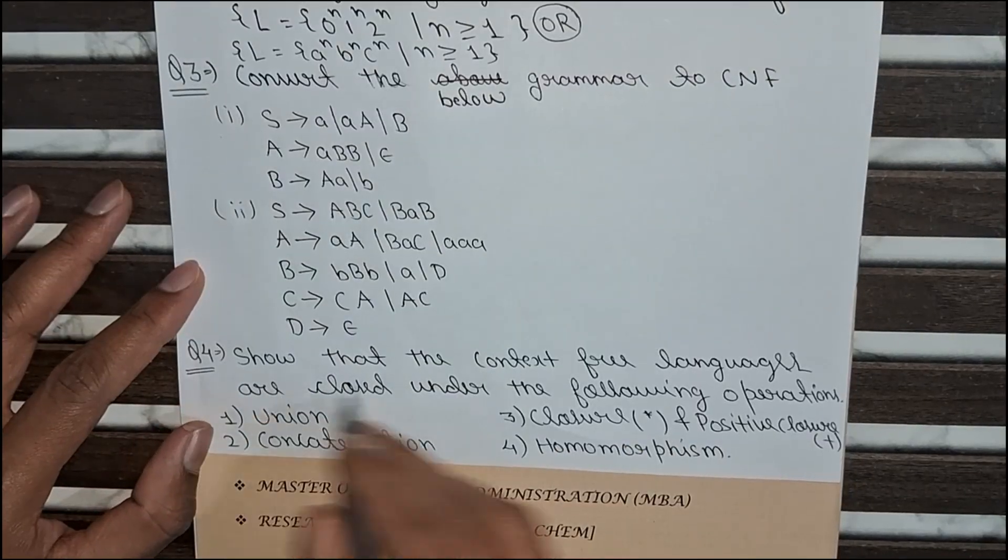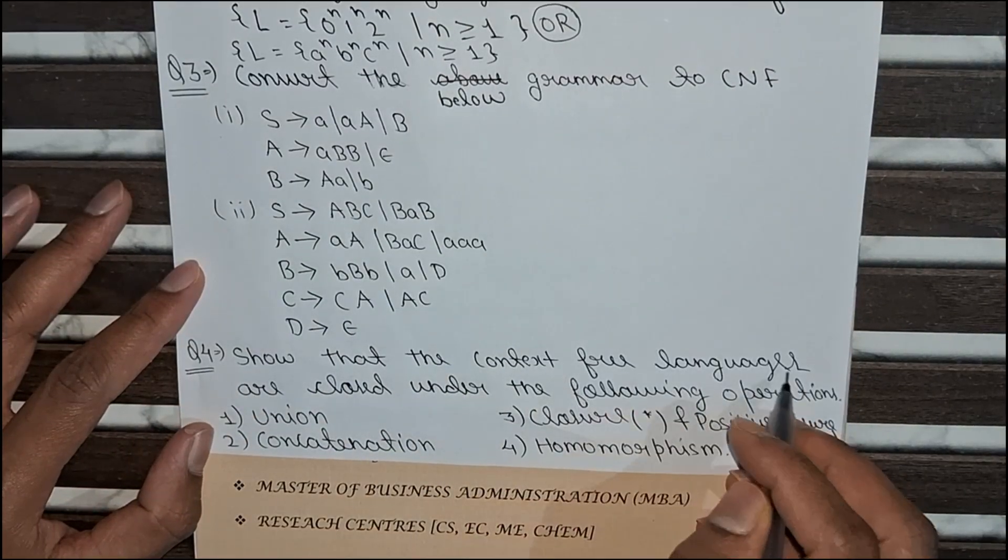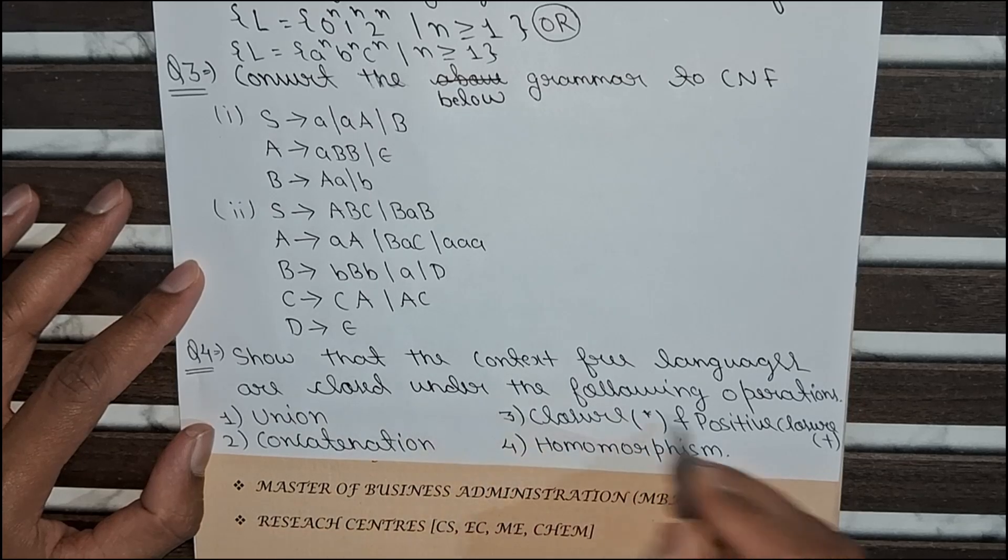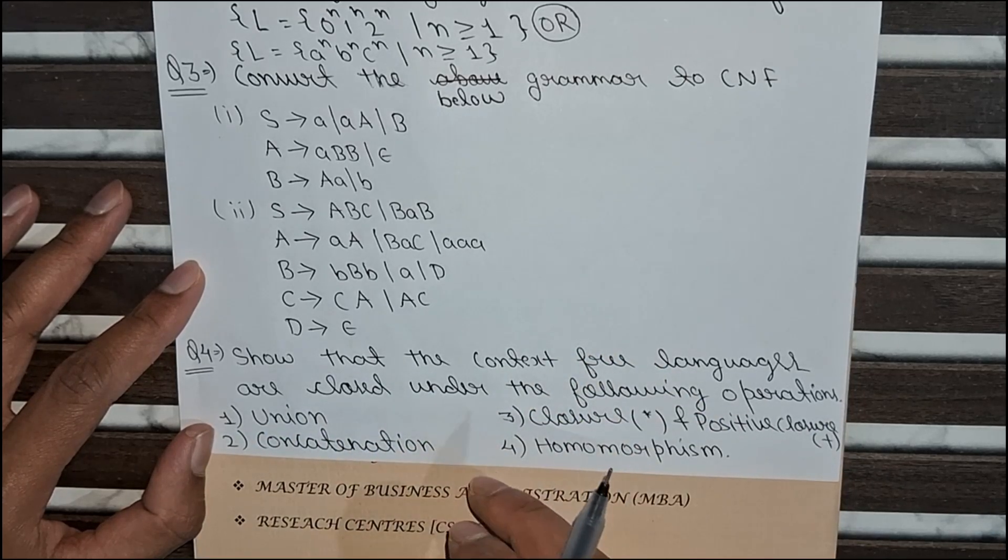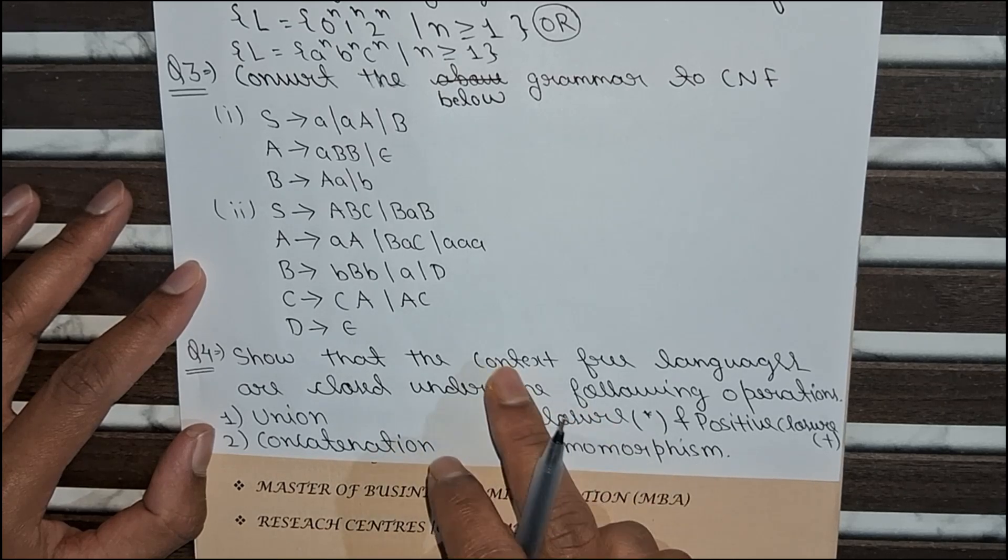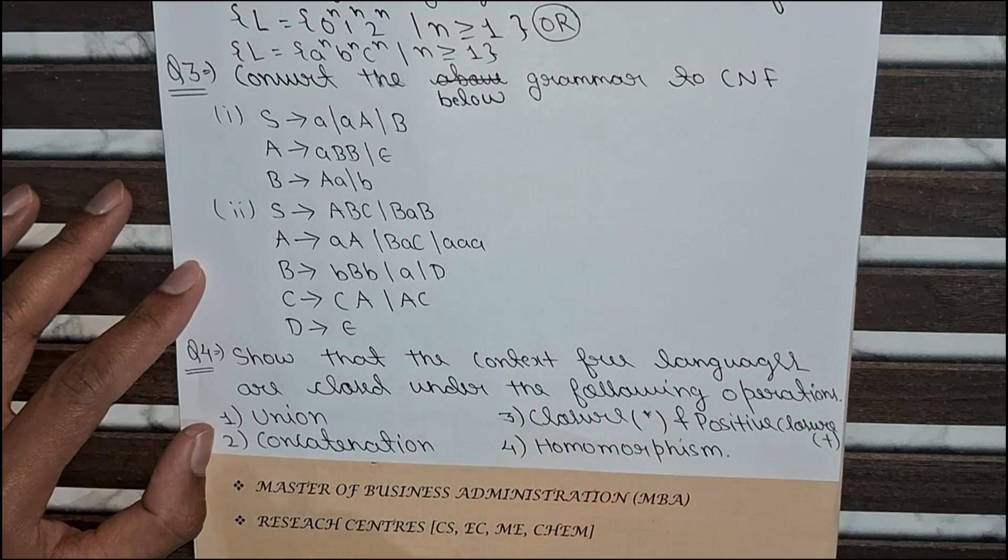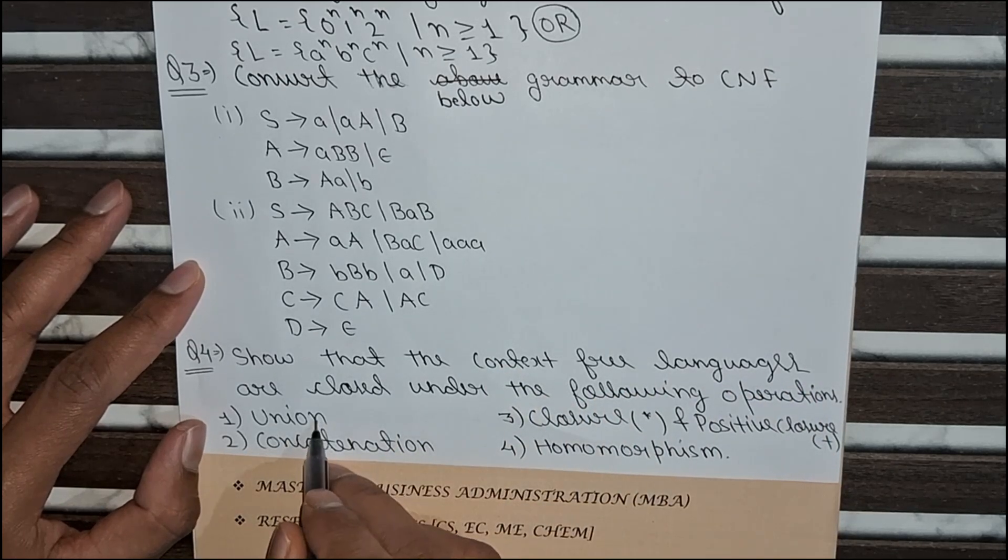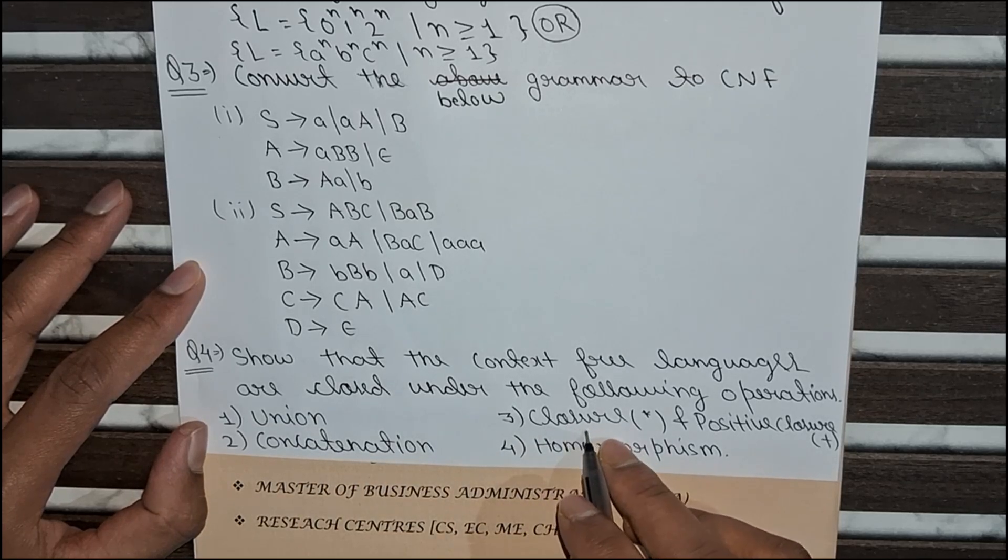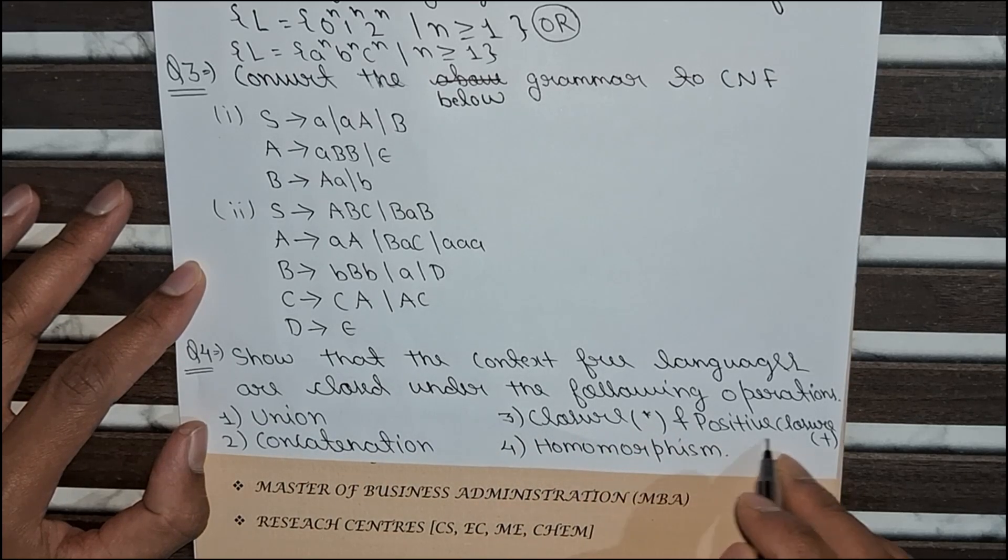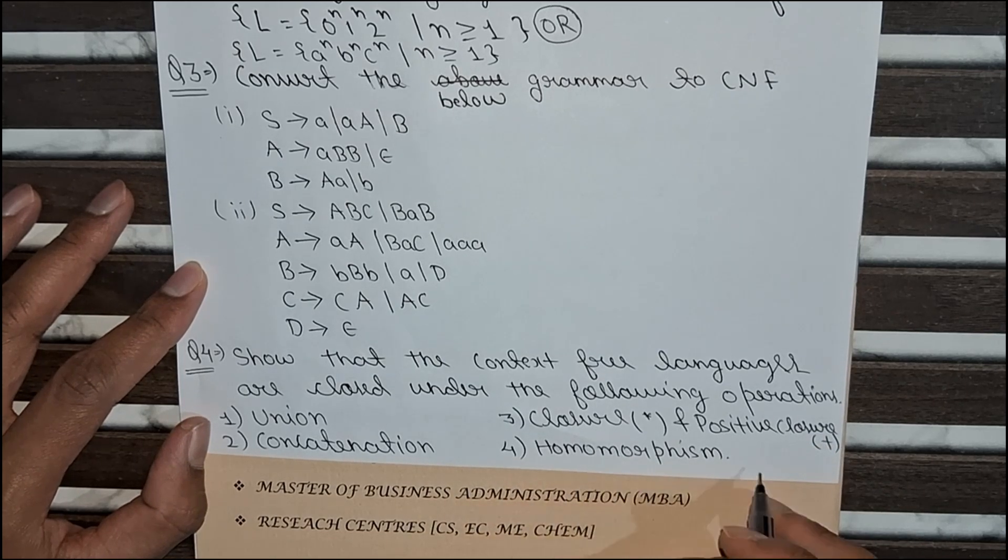Now the fourth question is, show that the context free languages are closed under the following operations. Here are four operations. You have to prove that these operations are closed under the context free languages. First part is union, second you have to prove concatenation, third you have to prove closure and positive closure. And fourth one is homomorphism.